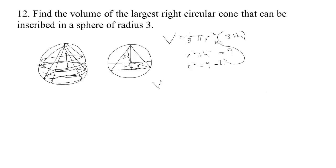So I can actually solve for r squared in this problem. r squared is 9 minus H squared. I'm going to plug that in here so that I have a volume as a function of the height alone. So, we have 1/3 π r squared, where r squared is 9 minus H squared times 3 plus H.